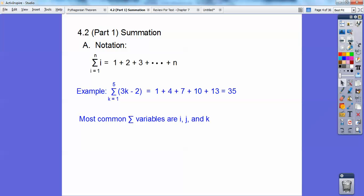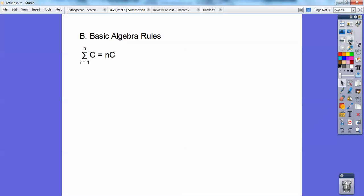Alright, so most common variables for the summation are i, j, and k. Okay, so basic algebra rules.